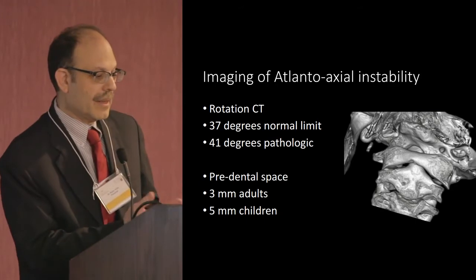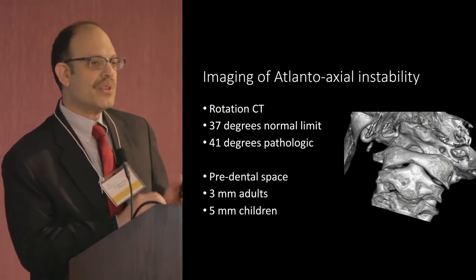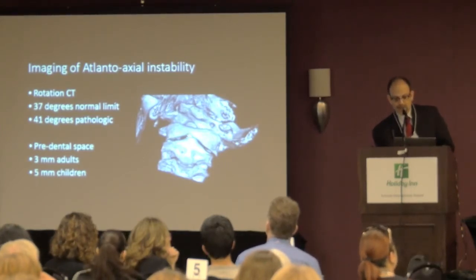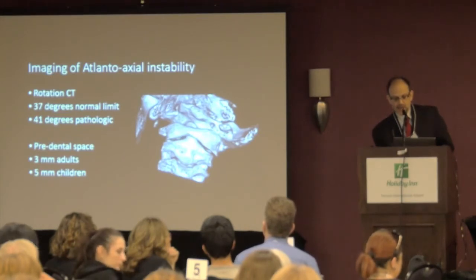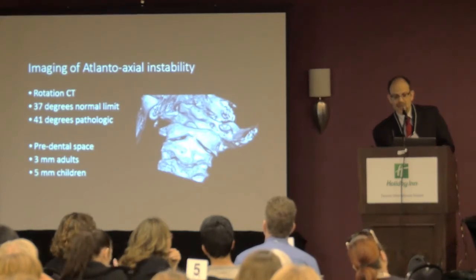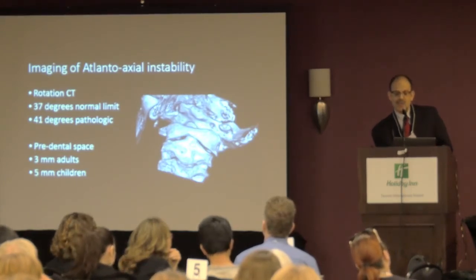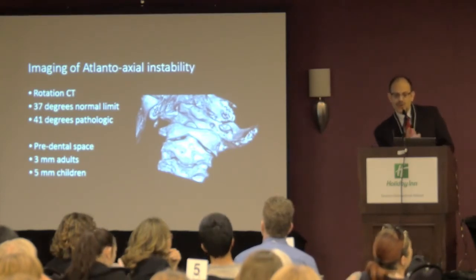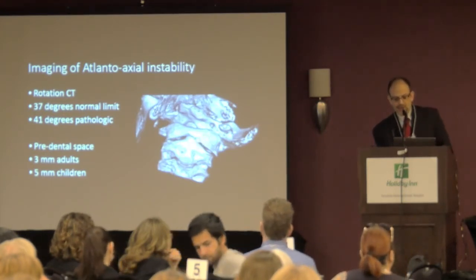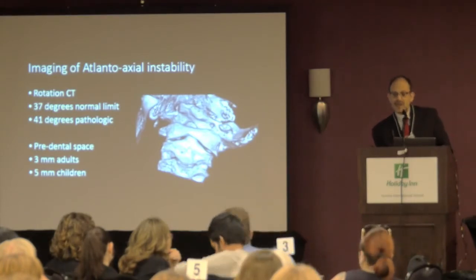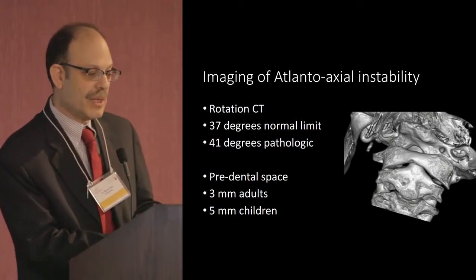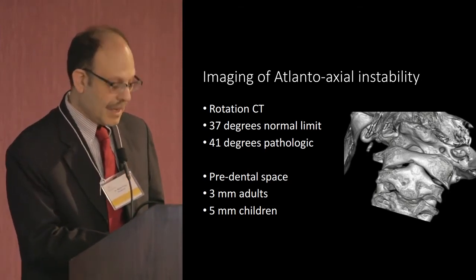This is atlanto-axial stability — the first and second cervical spine segments. This is the skull, this is C1, this is C2, and hidden behind C1 is a projection called the odontoid, which is a piece of C2. We want to see how they rotate and move. There is a small space between C1 and C2 supported by ligaments. When those ligaments don't work, there's abnormal motion, and that space can widen — something we can measure.